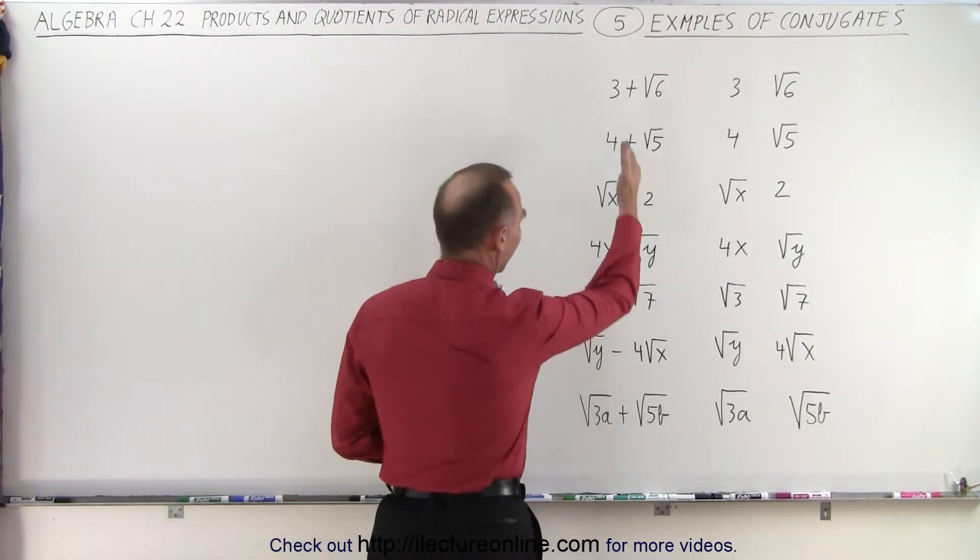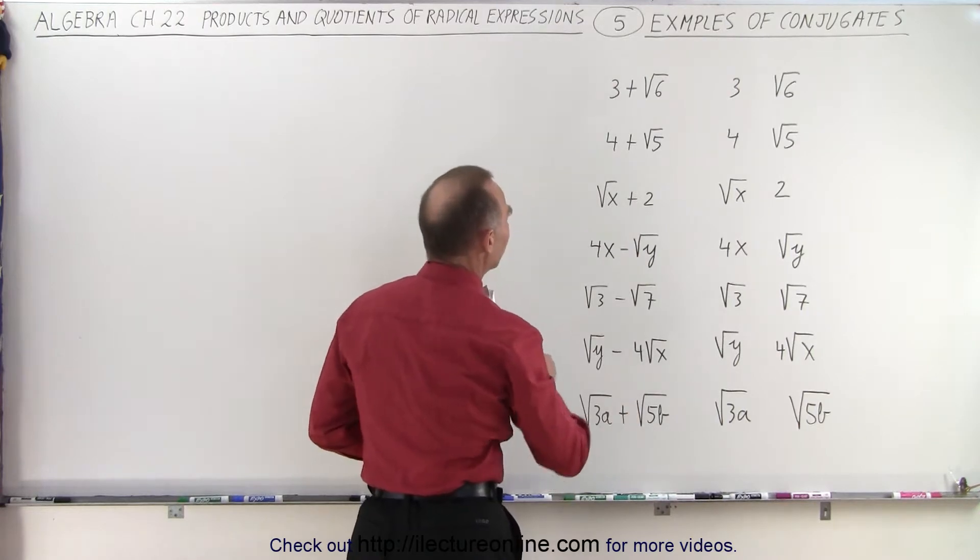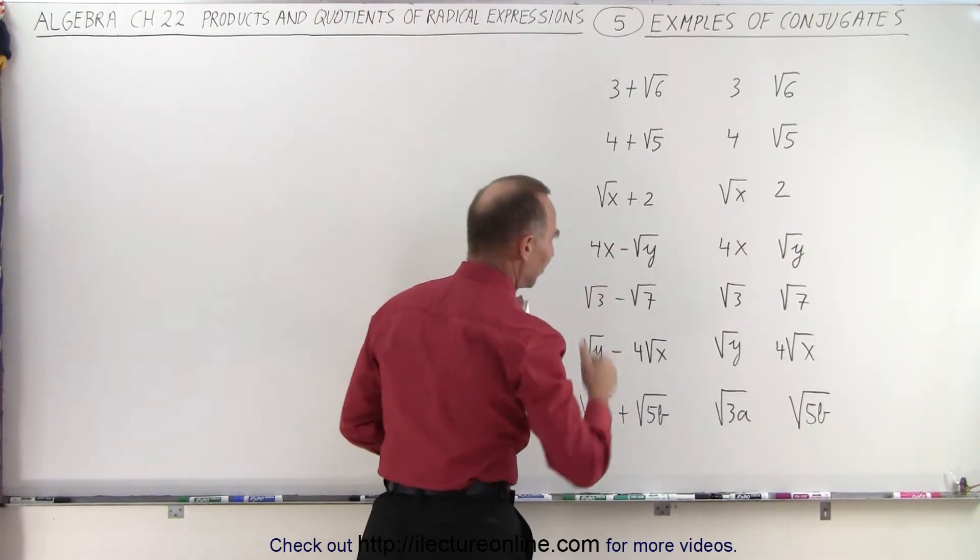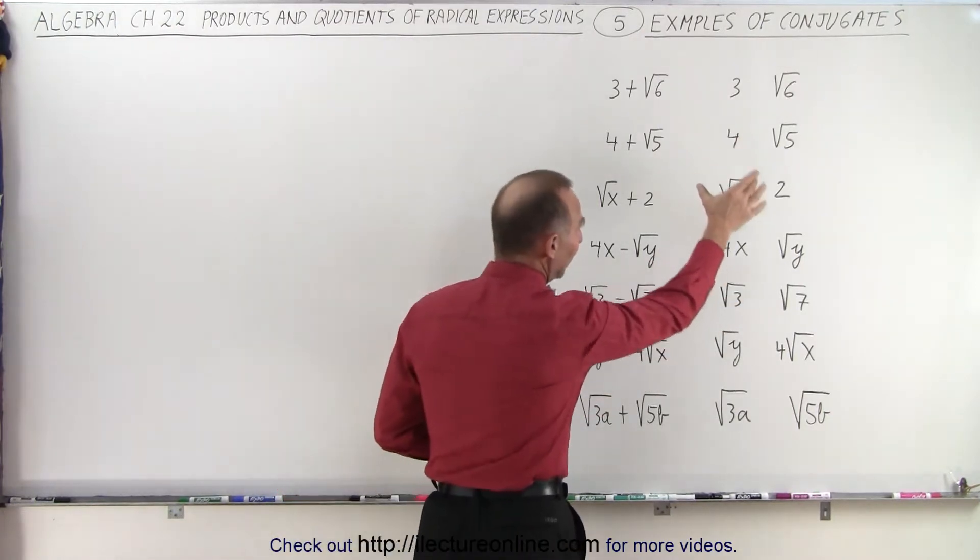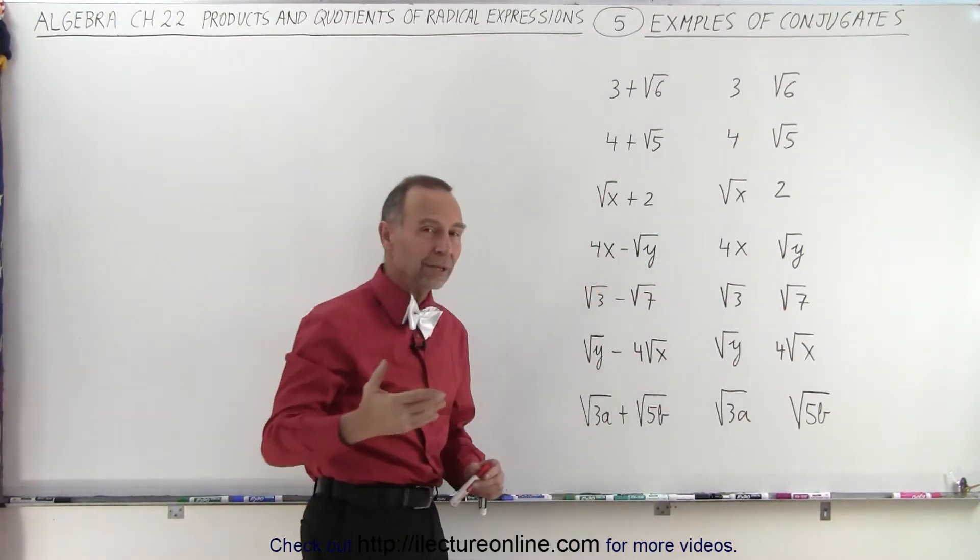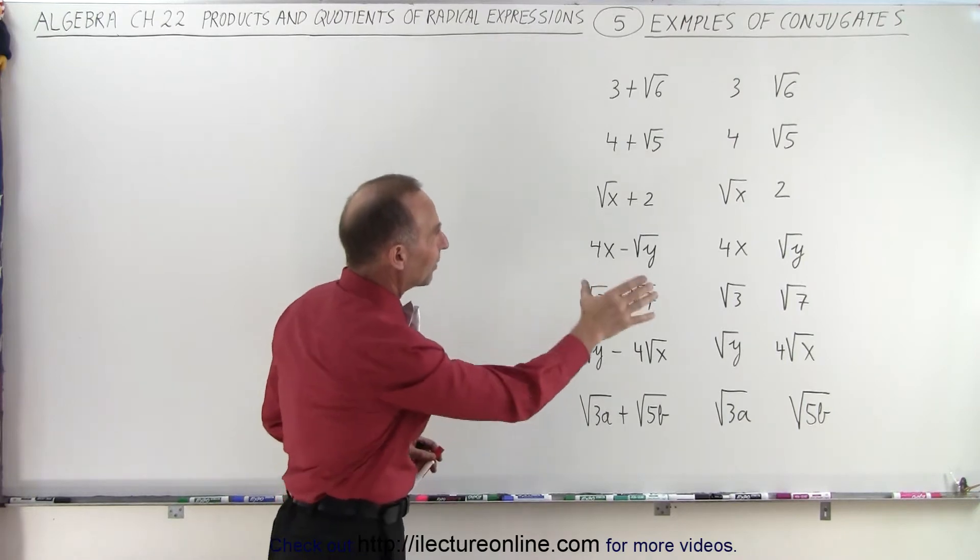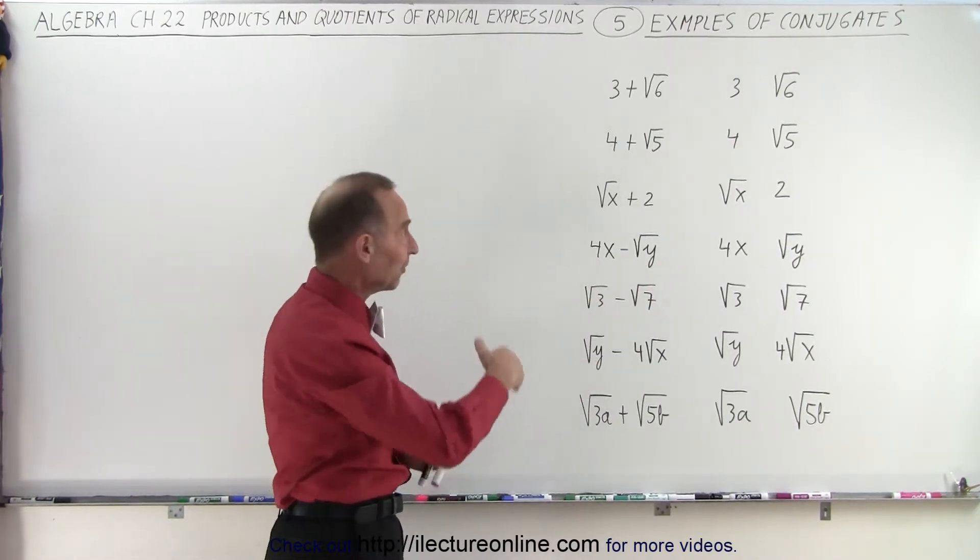So on the left side, we have a number of binomials. They either have a plus sign or a negative sign in between them. And on the right side, we have the same two terms, and we're supposed to put in the correct sign so that the right side is the conjugate of the left side.